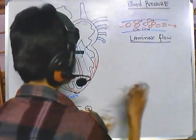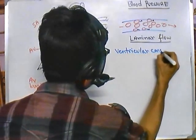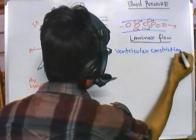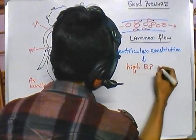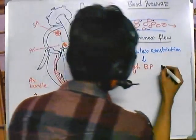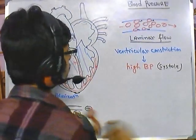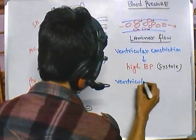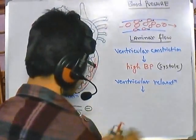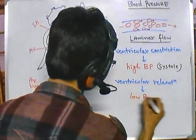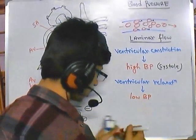Ventricular constriction generates high blood pressure — this is called systole. Ventricular relaxation creates low blood pressure — that means when blood is not flowing at high pressure, this phase is called diastole.